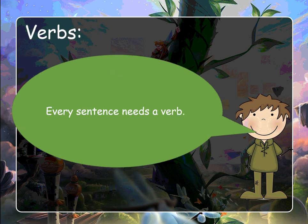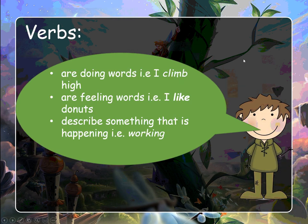So we now know every sentence needs a verb. Verbs are doing words — for example, 'I climb high', and the doing word is there. They are also feeling words — 'I like doughnuts', and 'like' is the feeling word there. And verbs describe something that is happening, for example, 'working'.